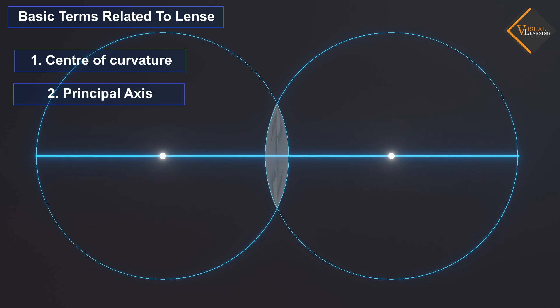Principal axis: When two spheres are part of the lens, it is the imaginary line joining the centers of curvatures of both spheres.